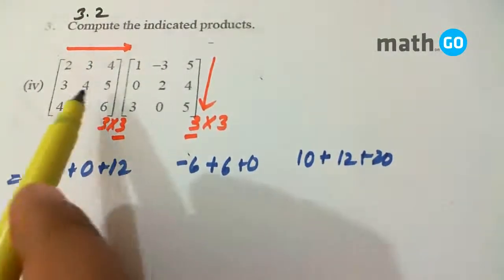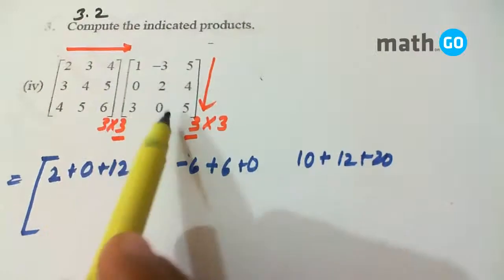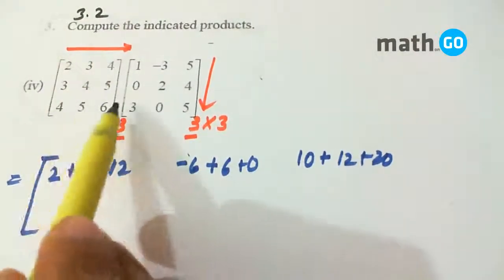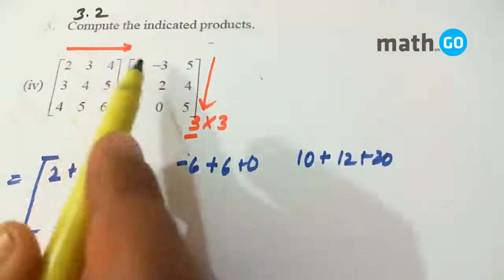Same with the second row and all the columns and similarly with the third row and all the columns. So how we do it?